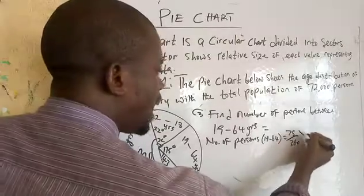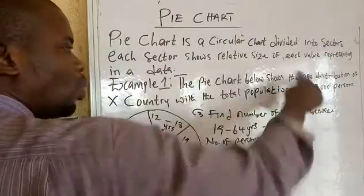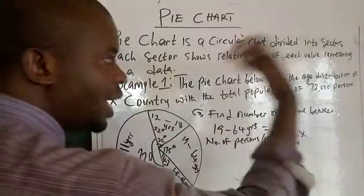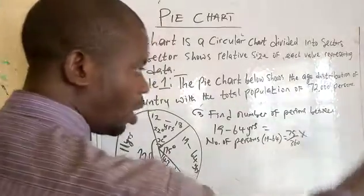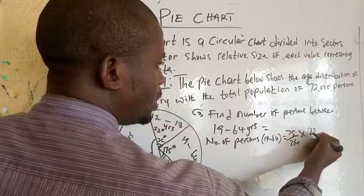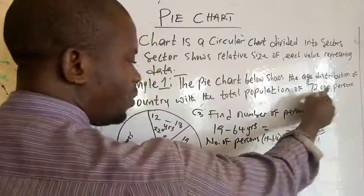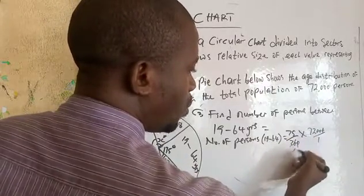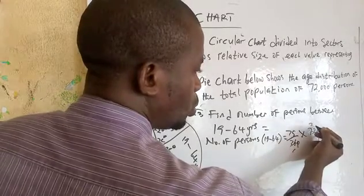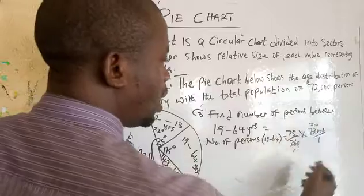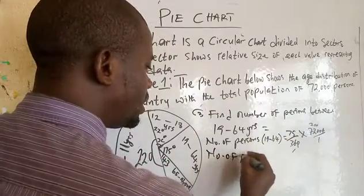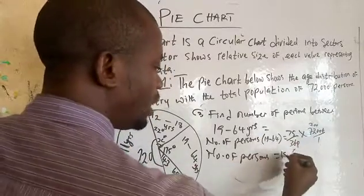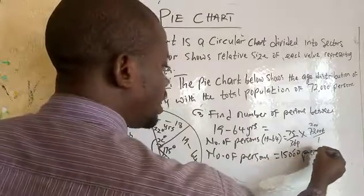Take that degree — 75° — over the total degrees in the circle, which is 360, then multiply by the total number of persons, which is 72,000. So: 75/360 × 72,000. When you calculate this, the number of persons equals 15,000. Between 19 and 64 years you have 15,000 persons.